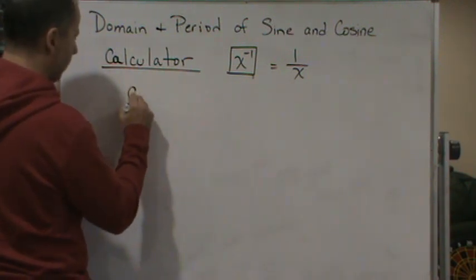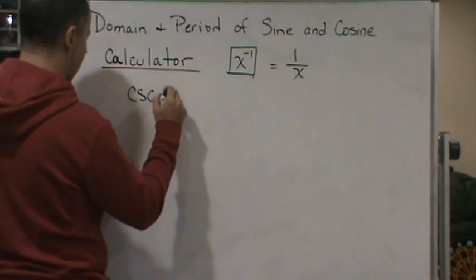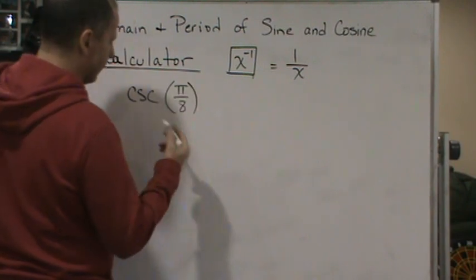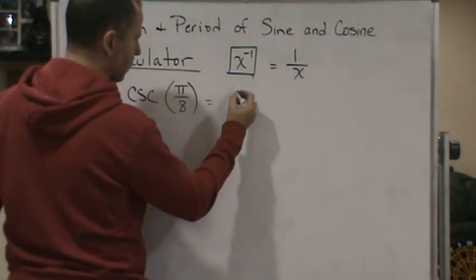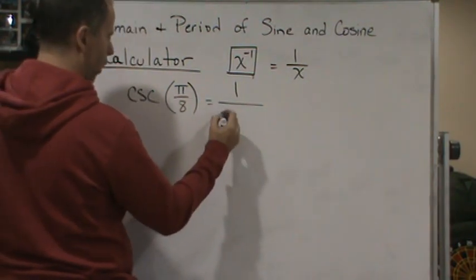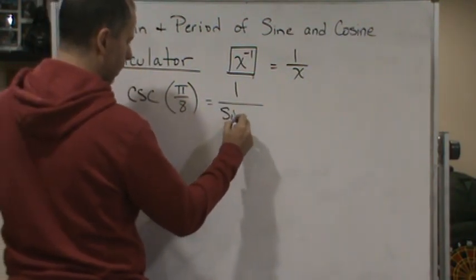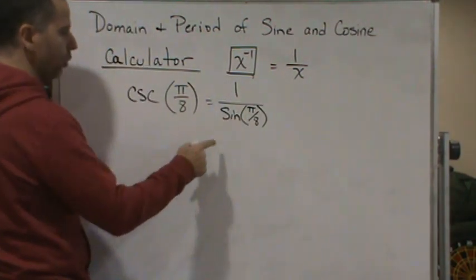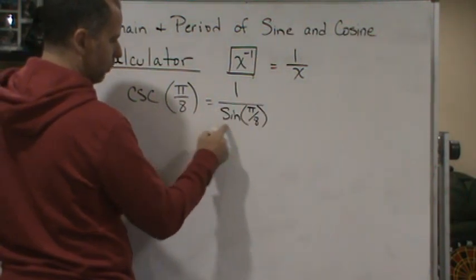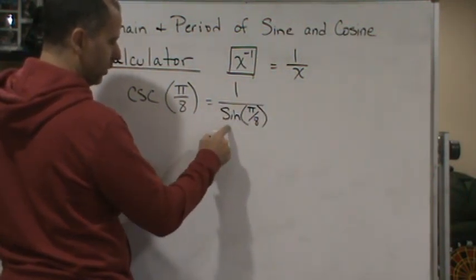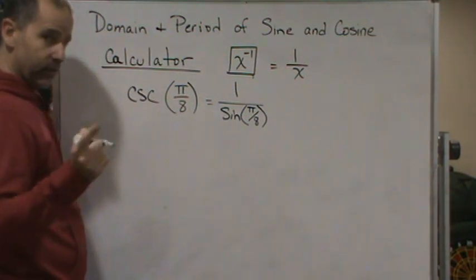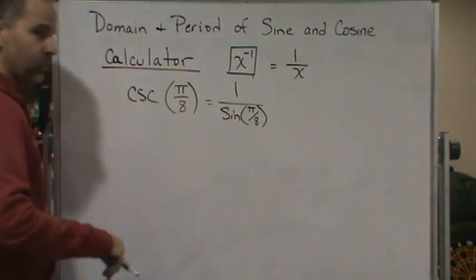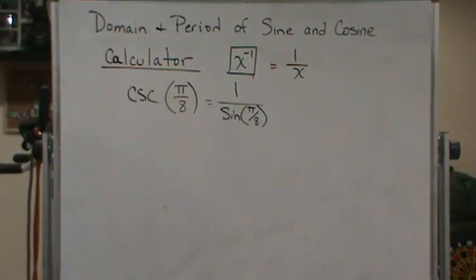For example, if I wanted to evaluate cosecant of pi over 8, well, on the calculator, what I would do is solve 1 over the sine of pi over 8. So I'd have to do this piece, the denominator, first on my calculator using the sine function button, and then use the inverse key to find the inverse of the answer.